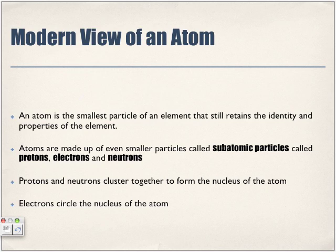The modern view of the atom: an atom is the smallest particle of an element that still retains the identity and properties of that element. If we take any element from the periodic table and isolate its atom, we find it consists of subatomic particles called protons, electrons, and neutrons.